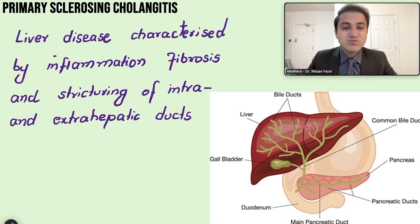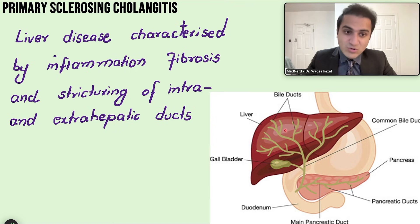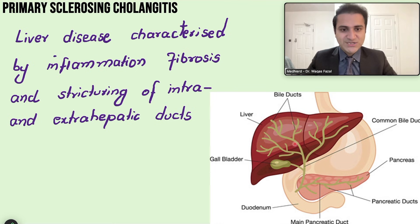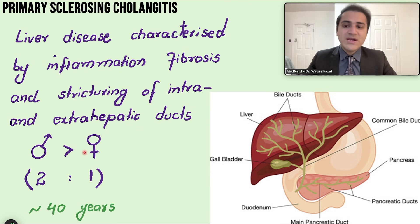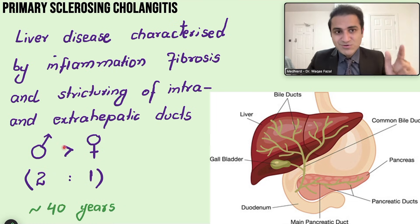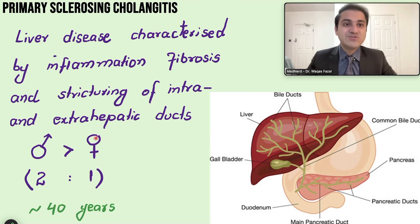In primary biliary cirrhosis, only the intrahepatic ducts are affected. In primary sclerosing cholangitis, both intra- and extrahepatic ducts are affected. PSC affects males much more than females, with a 2:1 ratio, compared to primary biliary cirrhosis which mainly affects young females.